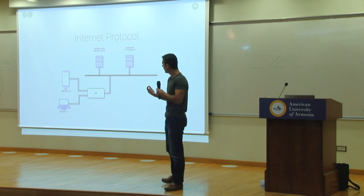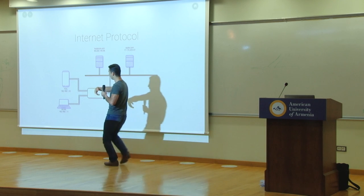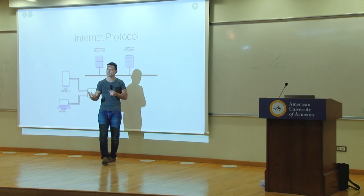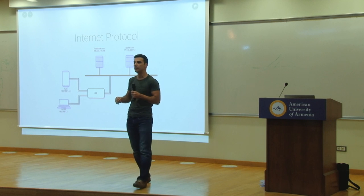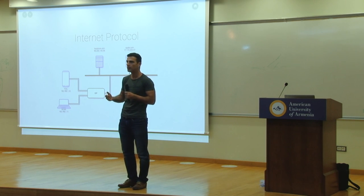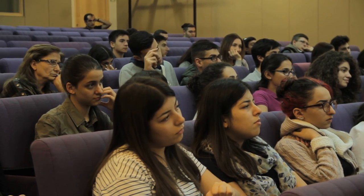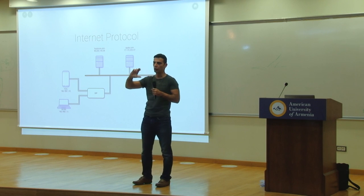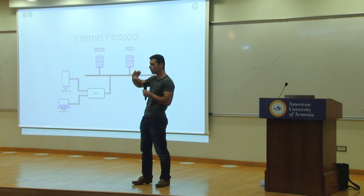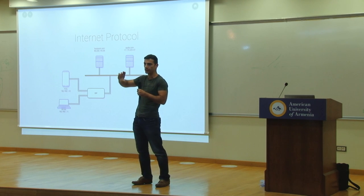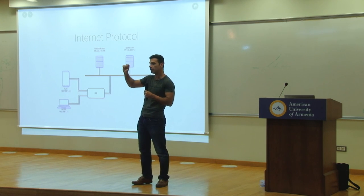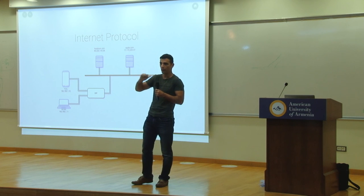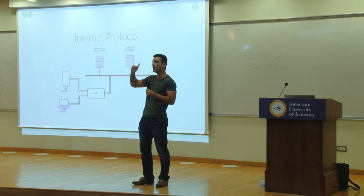Once I get back an address — suppose this is my phone — I then send a request. A request in the universe of the internet is known as a packet. Remember that word: packet. A packet basically has two parts: the header and the actual payload. The payload is where you put the actual stuff you want to send — whether it's an image, an email, or whatever. The header contains lots of things, including the from and to addresses.